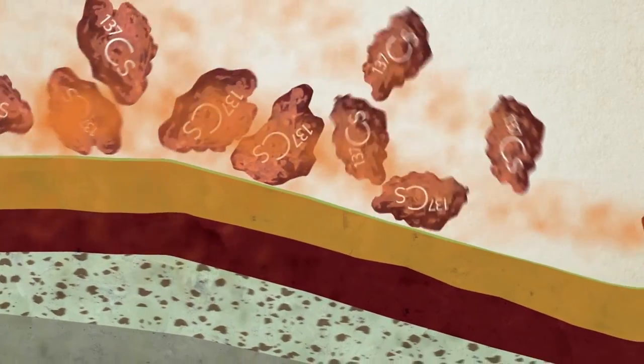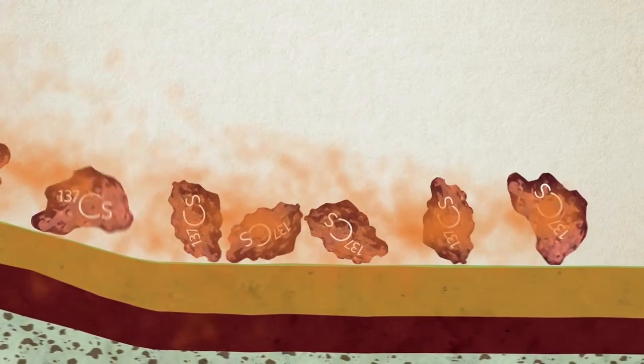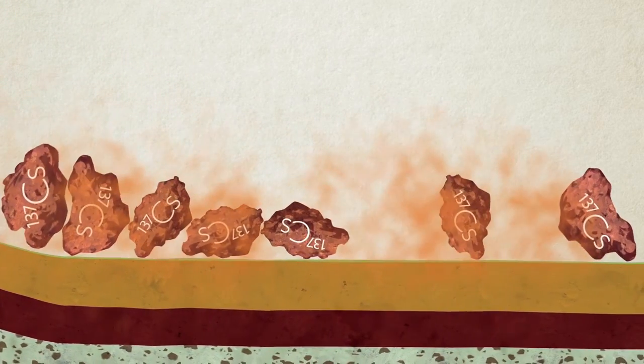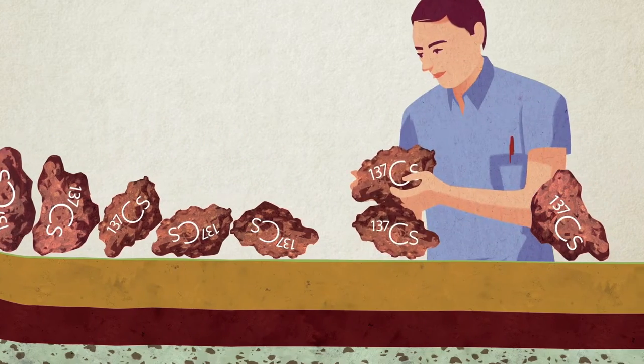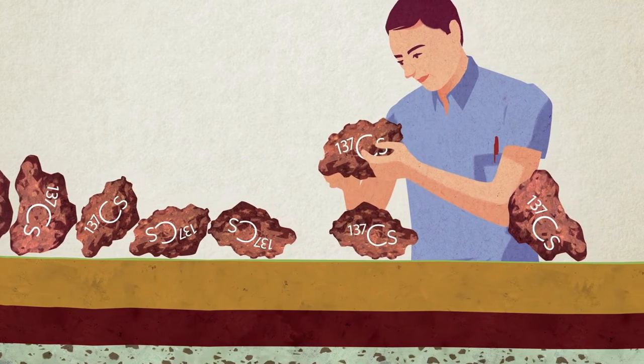Because it bound strongly to fine soil particles, it became possible to use the presence of the cesium as a tracer, which provided science with a way to measure soil erosion.